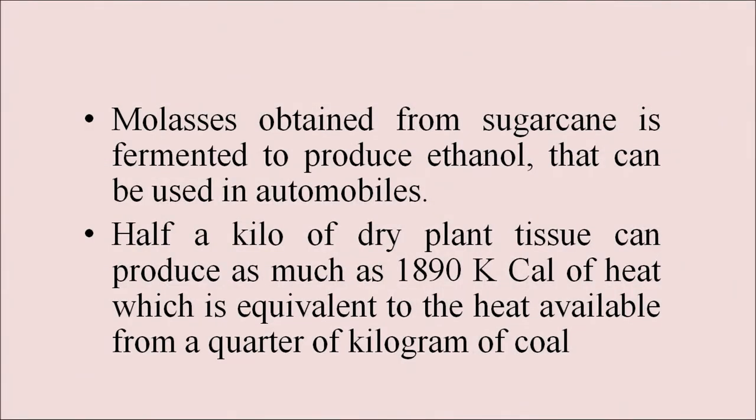Molasses obtained from sugarcane is fermented to produce ethanol that can be used in automobiles. Half a kilogram of dry plant tissue can produce as much as 1890 kilocalories of heat, which is equivalent to the heat available from a quarter kilogram of coal.